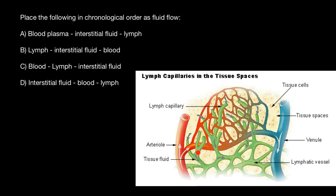What we see here is an arterial shown in bright red color and a venule shown in blue. Actually, blood from the arterial is bright red and blood from the venule is dark red, but sometimes in pictures we see venule blood as blue because if you look at your veins through your skin you perceive them as blue.